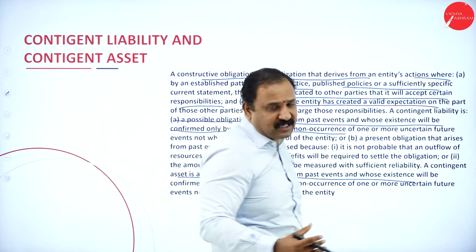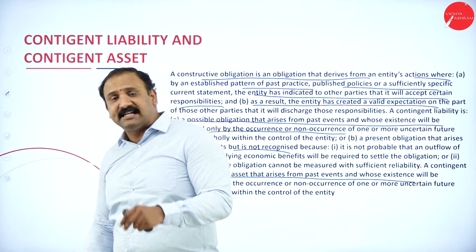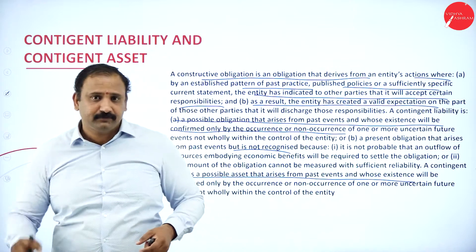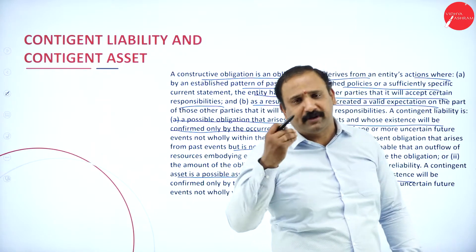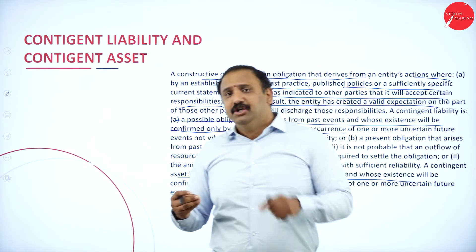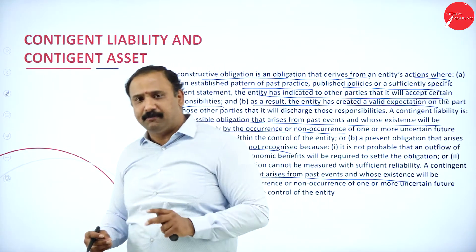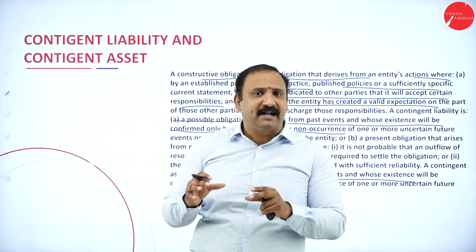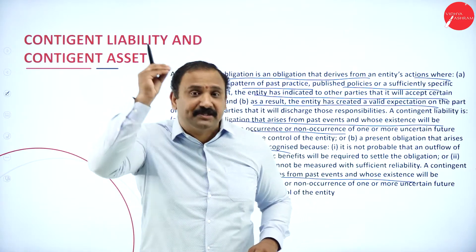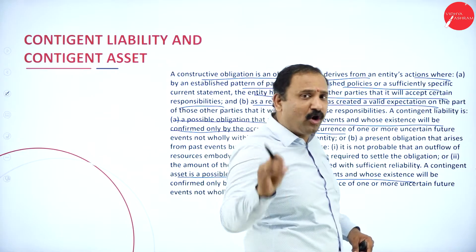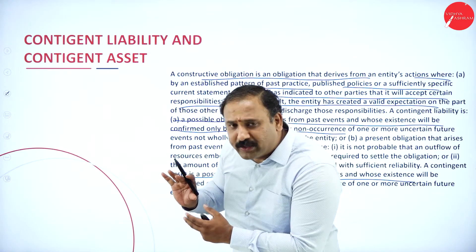What do we mean by a contingent asset? It is an asset kept to solve a provision. For example, you might keep land, a building, or machinery for a contingent purpose — or even gold itself can be a contingent asset, which you pledge to take out money or keep as a reserve backup. You do this because you feel that at any given point of time, a particular event can occur again.